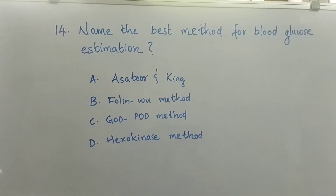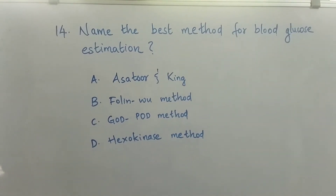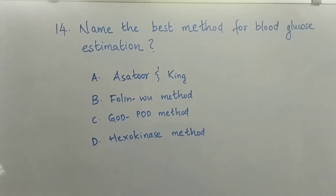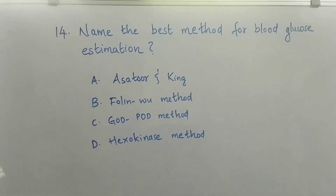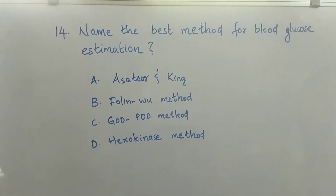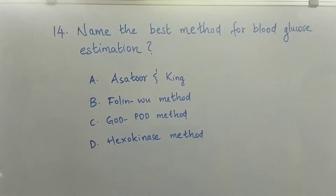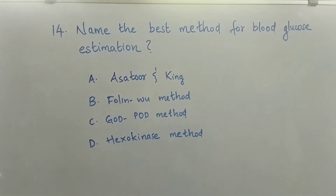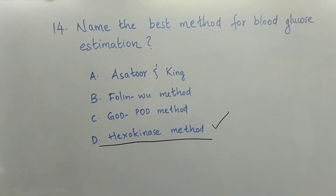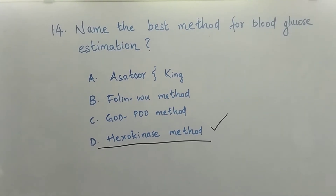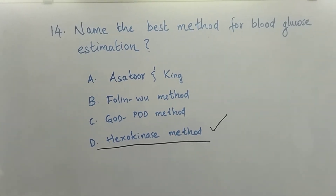Question number 14: Name the best method for blood glucose estimation — Option A: Asatour and King. Option B: Folin-Wu method. Option C: GOD-POD method (glucose oxidase peroxidase method). Option D: Hexokinase method. The right answer is Option D, Hexokinase method. The best method for blood glucose estimation is the hexokinase method.